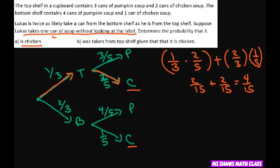probability. Now the second question is: was it taken from the top shelf given that it is chicken? So this means the probability that it was from the top shelf and chicken, given that it was chicken. And since